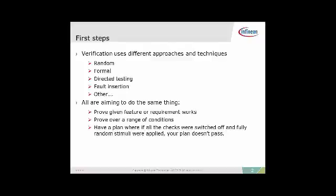All of these are aiming to do the same thing: basically prove that a given feature or requirement works and prove it over a range of conditions. The key thing we want to have at the end is a plan where if all the checks were switched off and fully random stimuli were applied, your plan doesn't pass. Too often with random simulation the technique is to have a massive functional verification model with lots of combinations which take ages to hit, yet if you accidentally disabled all checks and ran something completely random, you could potentially hit the same thing and get a pass without actually checking anything.